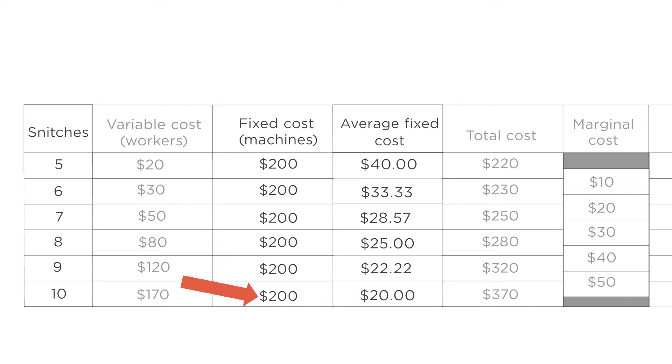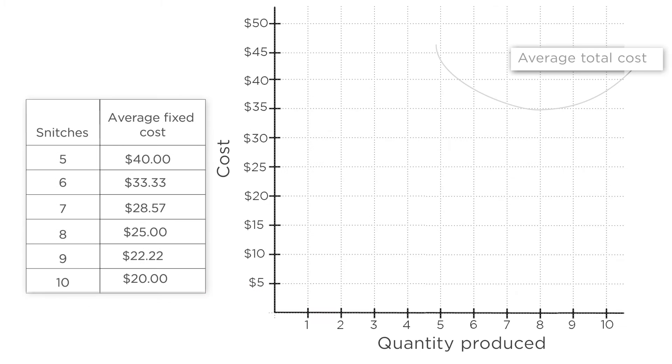We can draw the curve to show how average fixed cost falls as production rises. Average fixed cost is steadily declining, from $40 when the firm is producing 5 snitches, to $20 when it's producing 10.